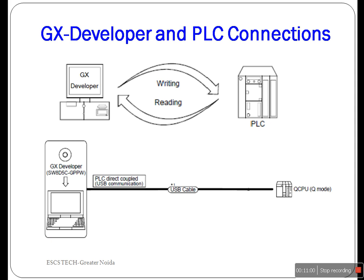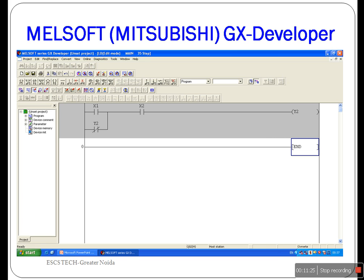GX Developer is the Mitsubishi ladder editing software used to program Mitsubishi PLCs. The first figure shows how GX Developer is used to perform reading from PLC and writing to PLC operations. The second figure explains the connection — the host PC is connected to the PLC through a USB cable. GX Developer is the ladder editing and programming software used to design ladder logic programs for Mitsubishi PLCs, and I will try to familiarize you with the GX Developer software and some of its functions.